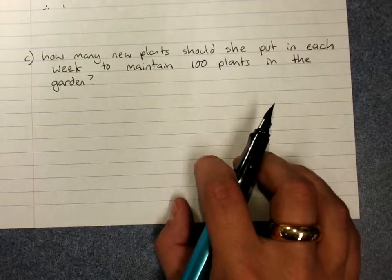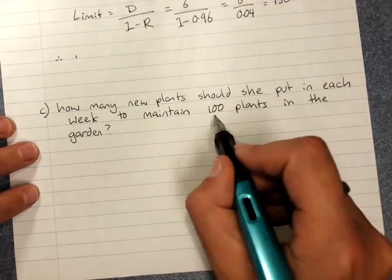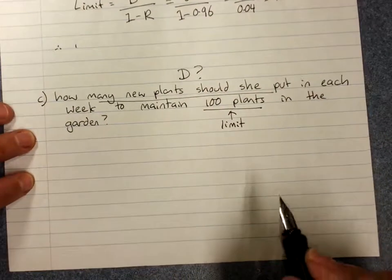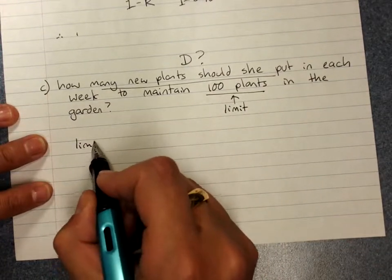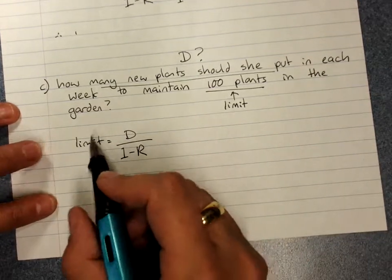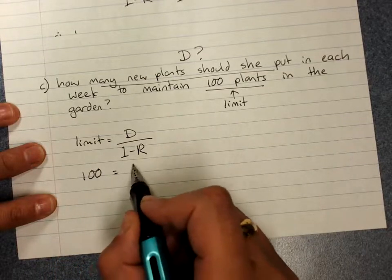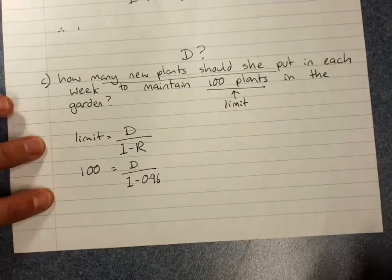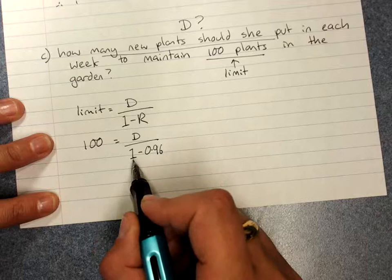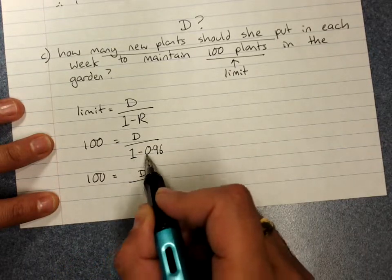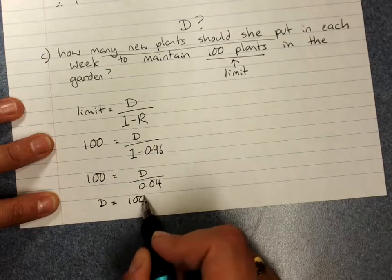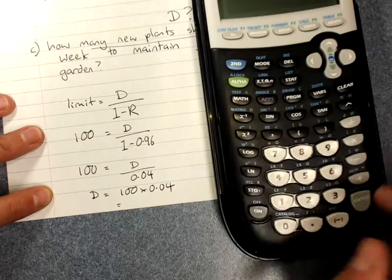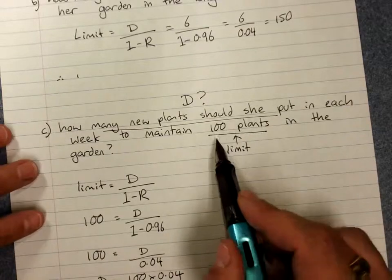How many new plants should she put in each week to maintain 100 plants in the garden? She wants the sequence to converge at 100 plants — that's the limit. The unknown is the common difference d. Using the limit formula: 100 = d over (1 minus 0.96) = d over 0.04. Solving for d: d = 100 times 0.04 = 4. She should plant 4 new plants each week to keep 100 plants in the garden.